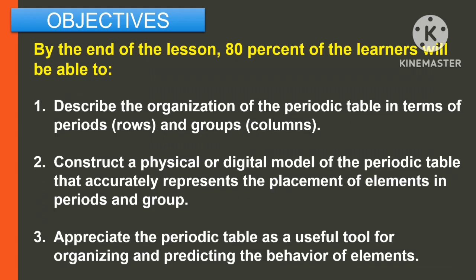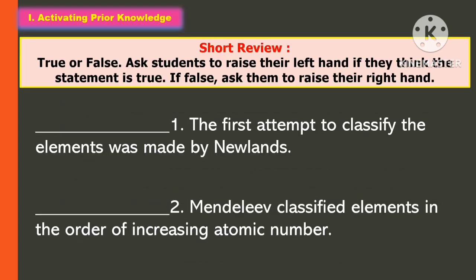For the objectives, by the end of the lesson, 80% of the learners will be able to: First, describe the organization of the periodic table in terms of periods and groups. Second, construct a physical or digital model of the periodic table that accurately represents the placement of elements in periods and groups. And third, appreciate the periodic table as a useful tool for organizing and predicting the behavior of the elements.